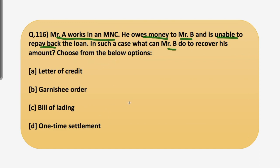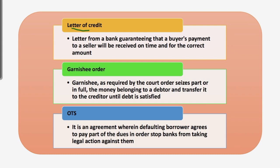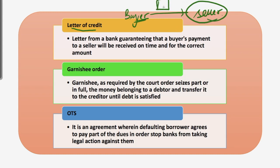Four terminologies have been given and to answer this question, it is really important to understand these terms. First is letter of credit. Suppose you are a buyer of some goods and you have taken them on credit from a seller but you are unable to pay. The bank guarantees to the seller that he will receive his payments on time and for the correct amount.